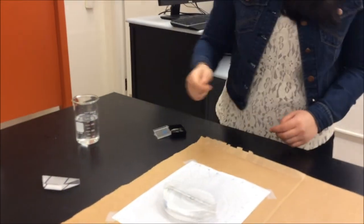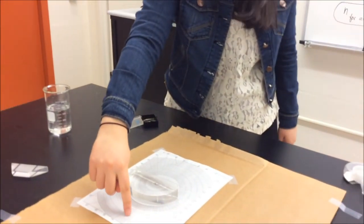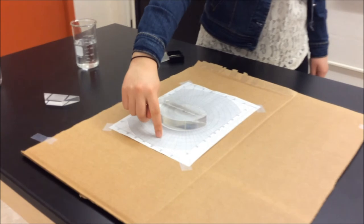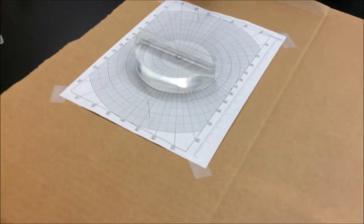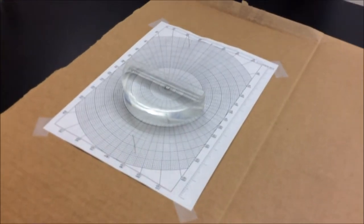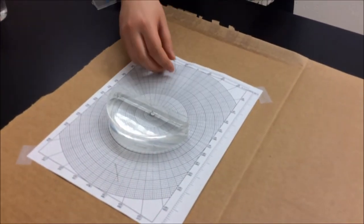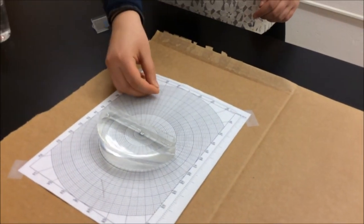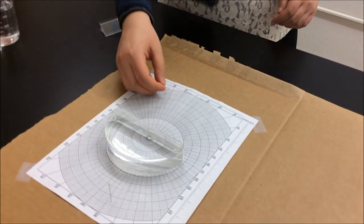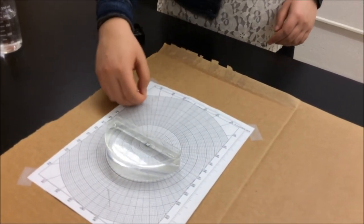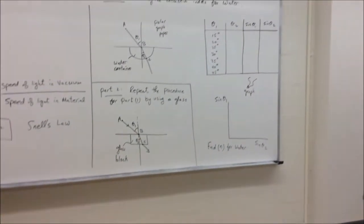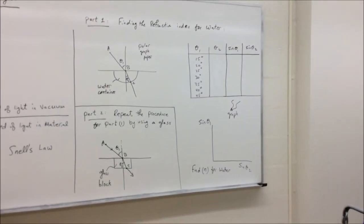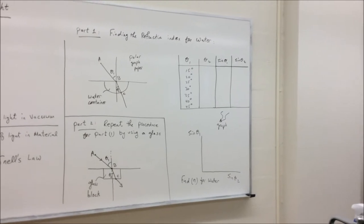Measure the angle — that's going to be theta 2. Repeat this procedure for different incident angles: change the pin to 20 degrees, 25 degrees, 30 degrees, all the way up to 45 degrees, and record what theta 2 is for each.